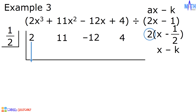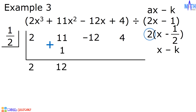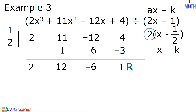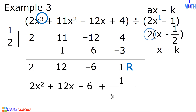Bring down the first coefficient and multiply by 1 half. 1 half times 2 is equal to 1. 11 plus 1 is equal to 12. 1 half times 12 is equal to 6. Negative 12 plus 6 is equal to negative 6. 1 half times negative 6 is equal to negative 3. 4 plus negative 3 is equal to 1. The remainder is equal to 1. Since the degree of the dividend is 3 and the degree of the divisor is 1, the degree of the answer is 2. And we have 2x squared plus 12x minus 6 plus 1 over x minus 1 half.